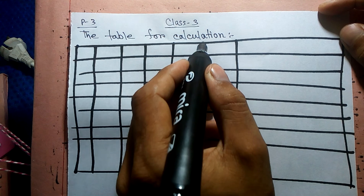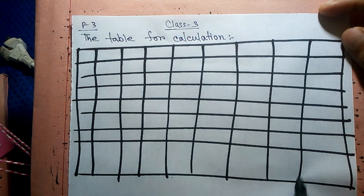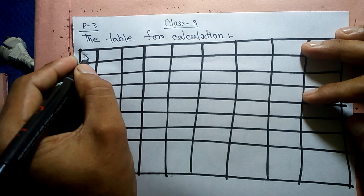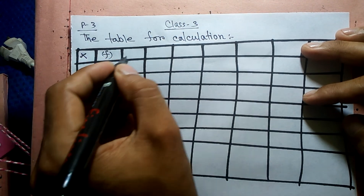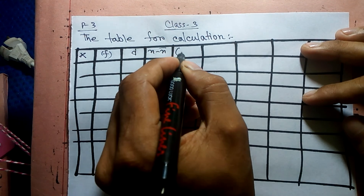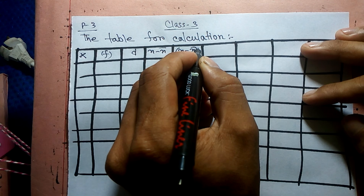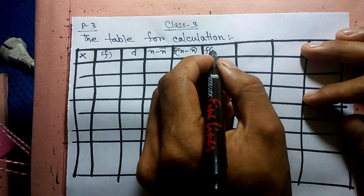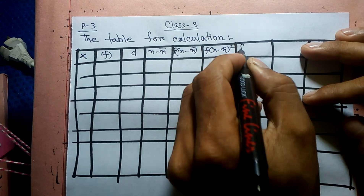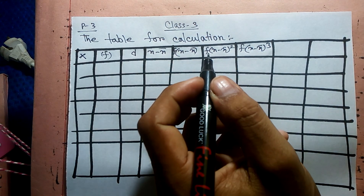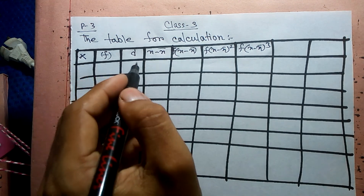We have three columns. No problem there. The mid-value mid-point will be written as x. On top of that, frequency, then d, then fd. We write f into x minus x̄, then f into x minus x̄ whole square, and f into x minus x̄ whole cube.